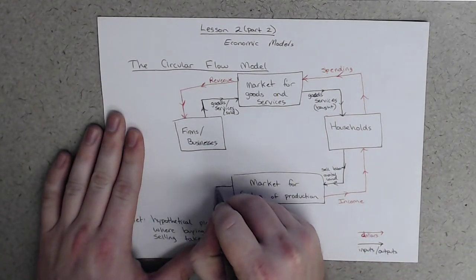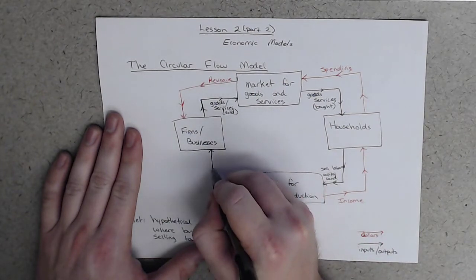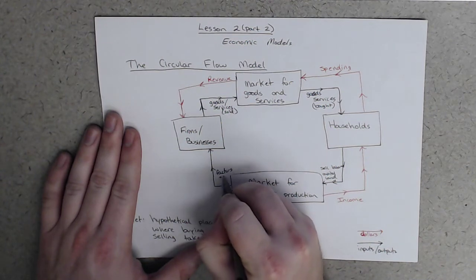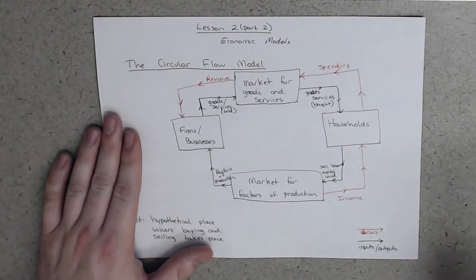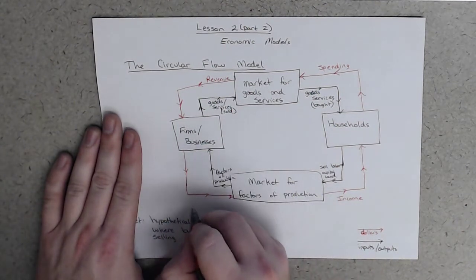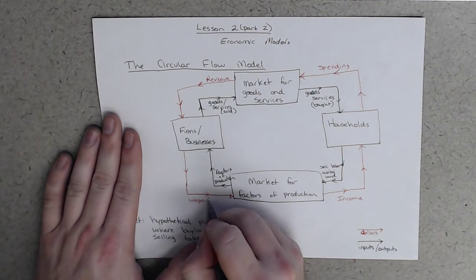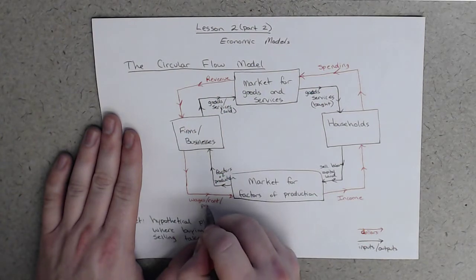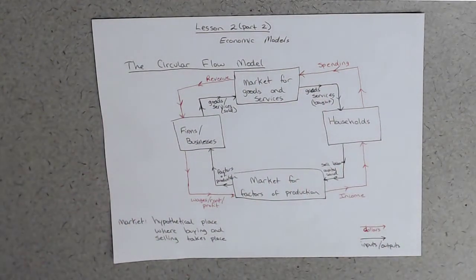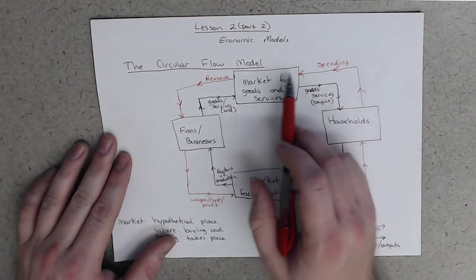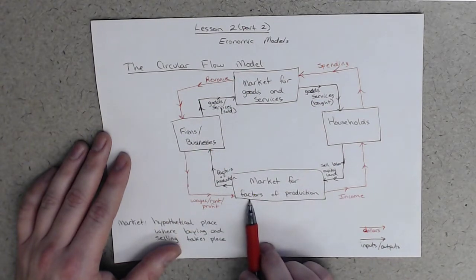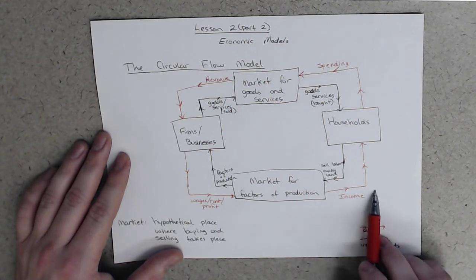And then the last part is here, the business buys your time or your labor or your machines or your land. We just call these things factors of production. And they pay, they will pay wages, rent, or profit. And so if you look at this, we have a circular flow of money and goods. So money starts off in the households, people buy goods and services. That turns into revenue for the business, which they then spend on their employees to buy production. And the employees receive income that goes back into the household.